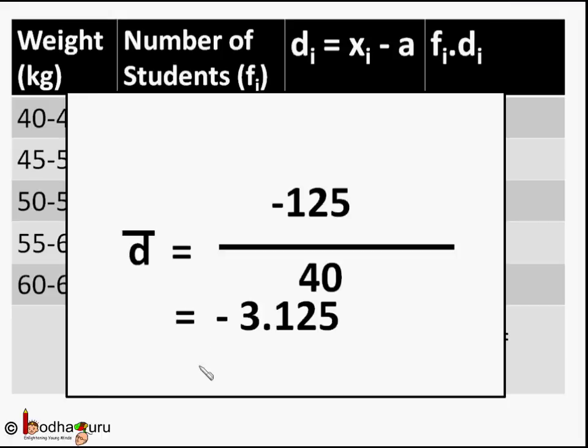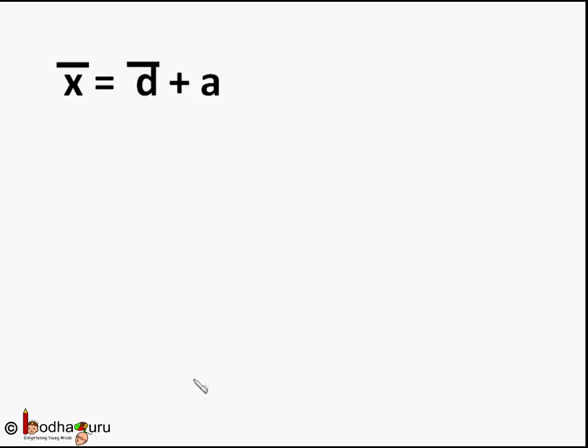And the mean of actual data, that is x̄, is equal to d̄ plus a. Why? Remember we removed a from each of the x to calculate the deviation d1, d2, d3. So here we add a back.